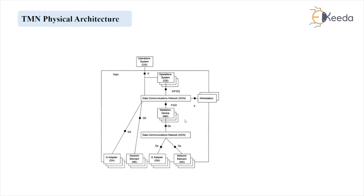The Data Communication Network DCN is the physical implementation of DCF, which is not a functional block but a TMN function. The network element, Q Adapter, and Workstation reflect their respective TMN functions. This means we cannot consider DCN as a functional block. If anybody asks about the total number of physical blocks present in the physical architecture, the answer will be 5: Operation System block, Meditation Device block, Q Adapter block, Network Element block, and Workstation block. The DCN is the representation of the function activities done by the TMN itself.